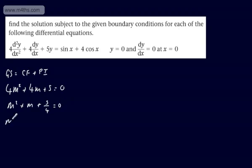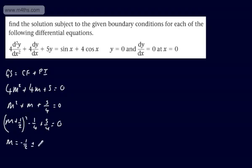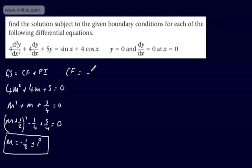Completing the square: (m + 1/2)² − 1/4 + 5/4 = 0, which gives 1, so subtracting 1 from both sides. My solutions are m = −1/2 ± √(−1), which gives i. So m = −1/2 ± i.